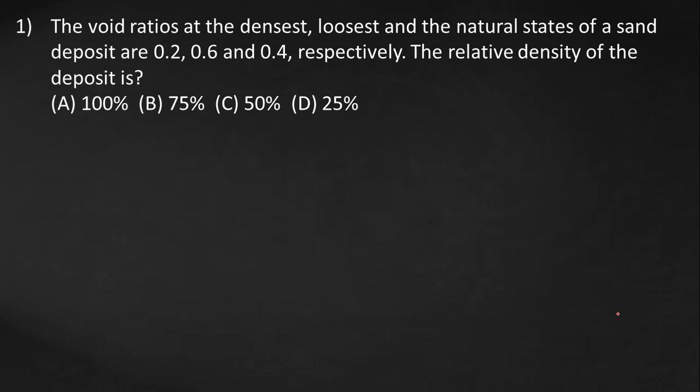The void ratios at the densest, loosest, and the natural state of a sand deposit are 0.2, 0.6, and 0.4. It means that emax equals 0.6, emin equals 0.2, and e at natural state equals 0.4.